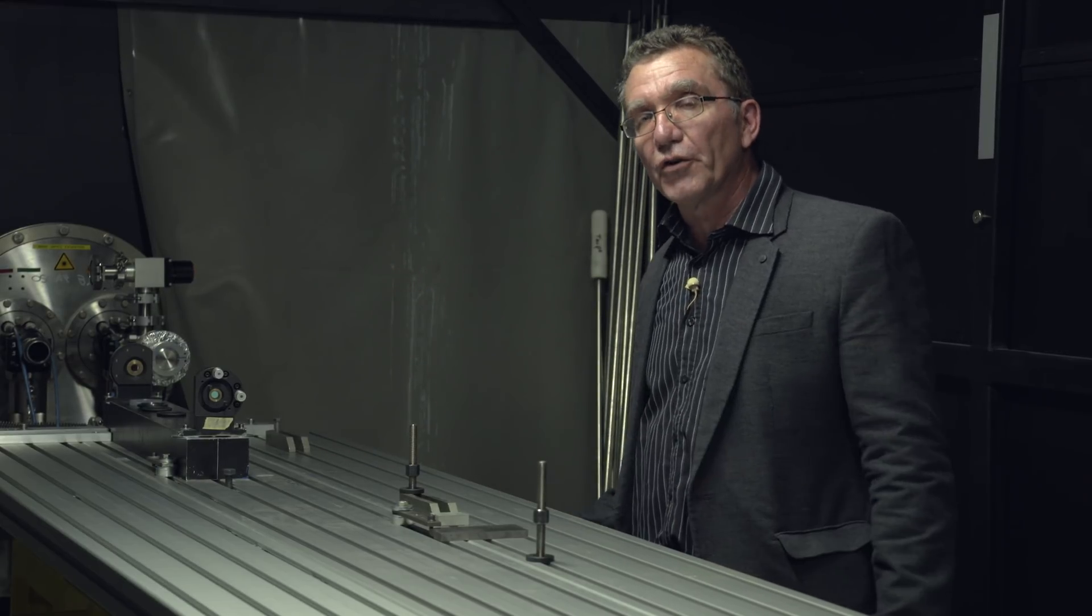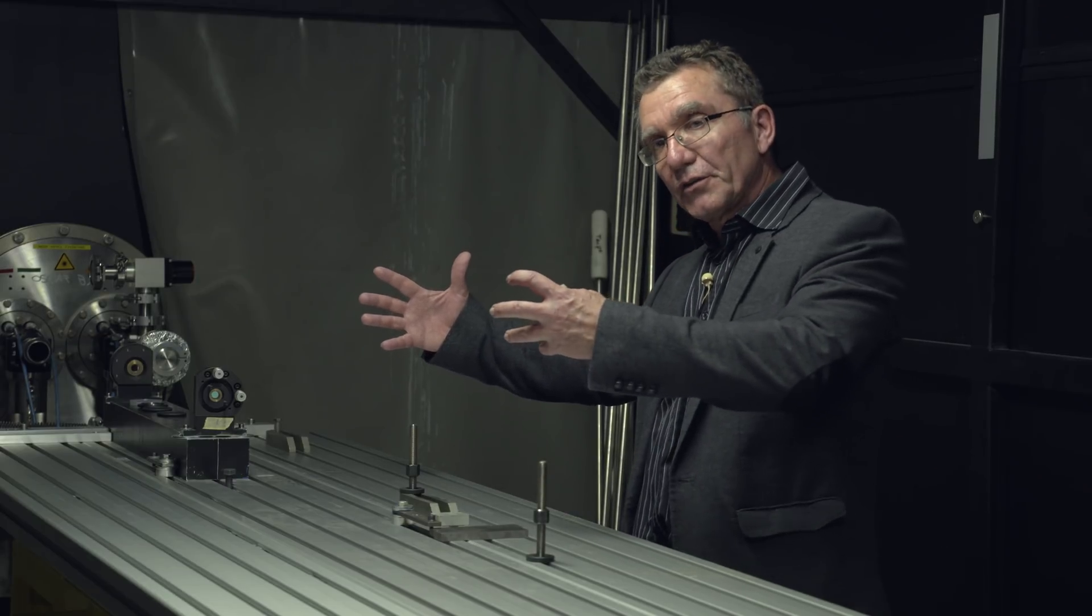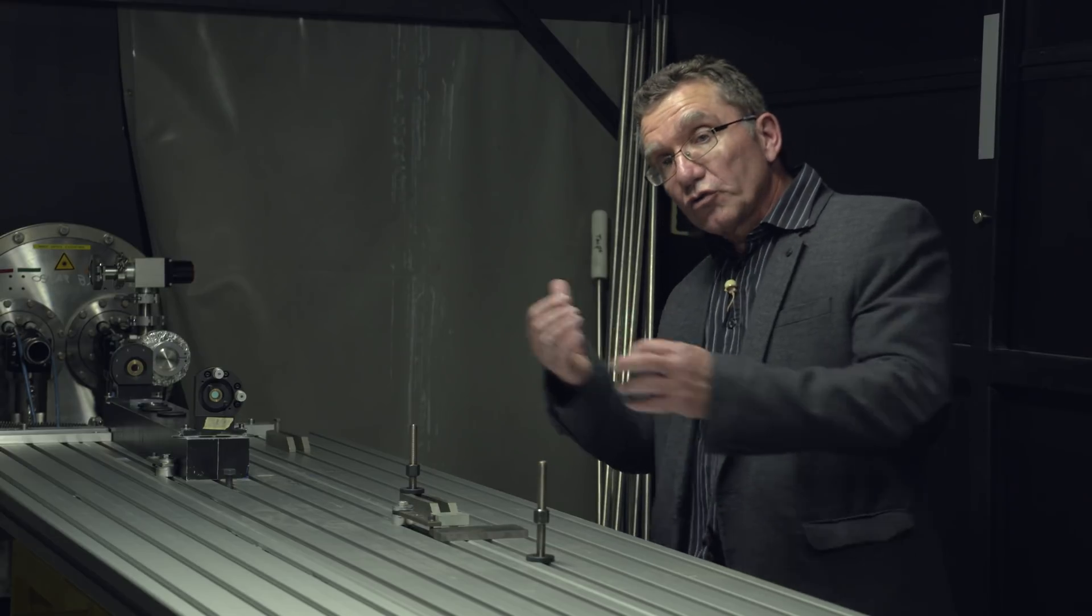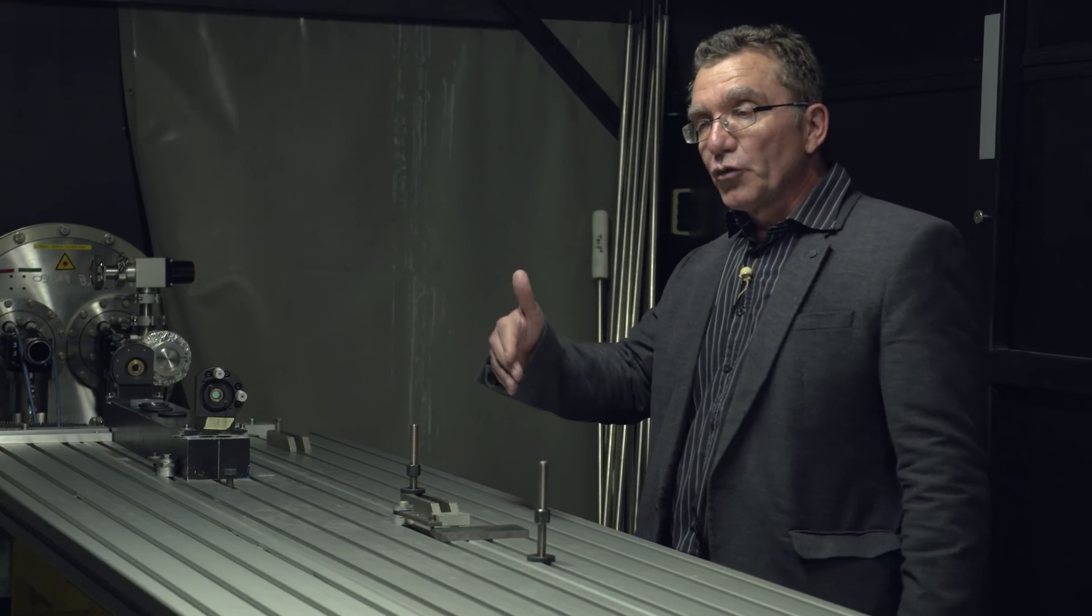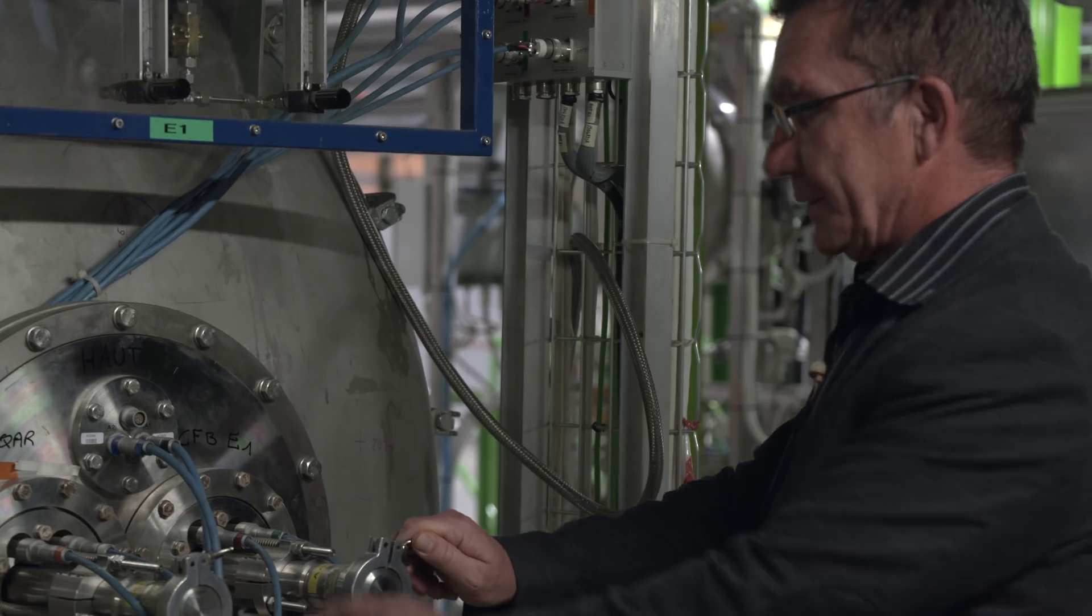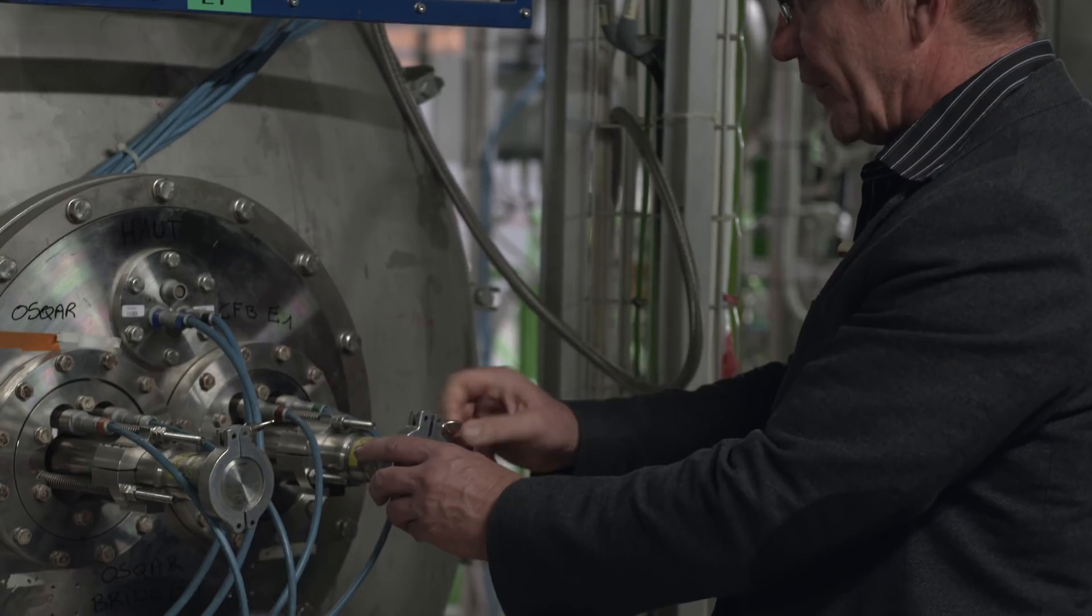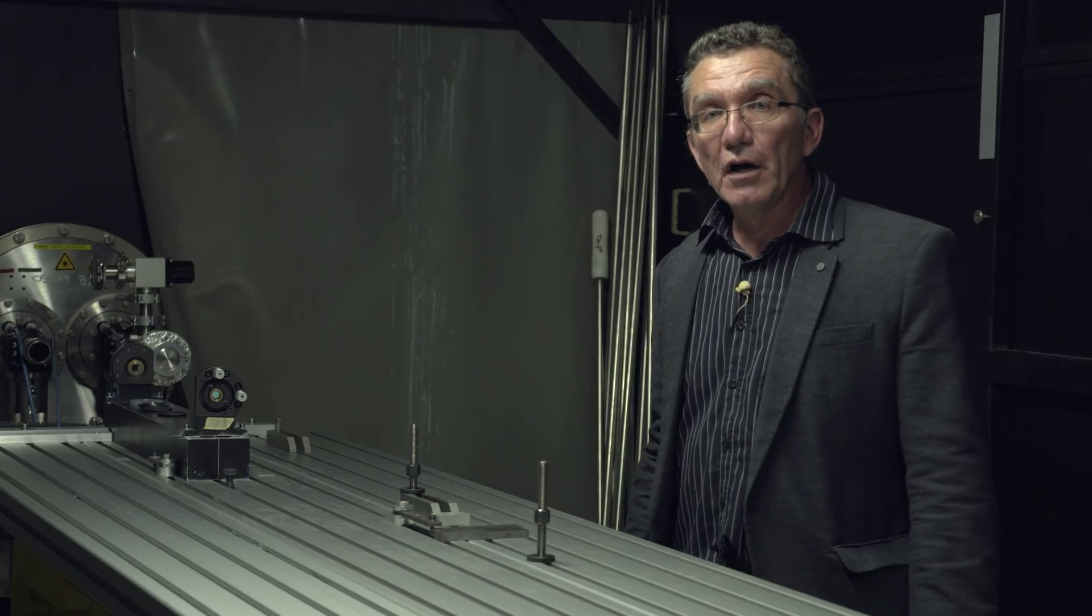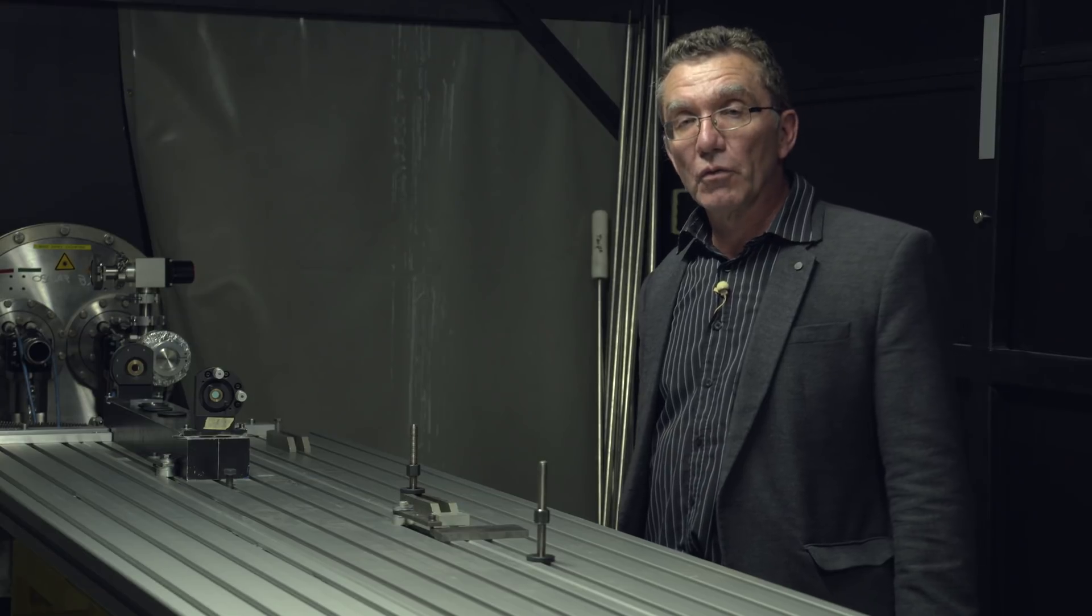Only this particle that has been transmitted could go through this barrier to reappear in form of photons in the second dipole that is located behind the wall. This is why this experiment is called a light shining through the wall experiment.